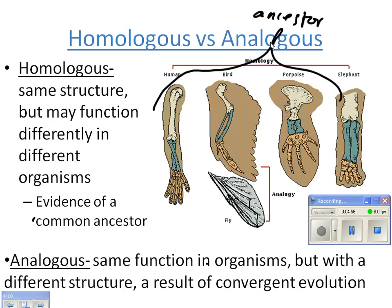Even though these structures have different functions now, their similarity in structure points to a common ancestor. Analogous structures are a result of convergent evolution — structures that have the same purpose, like the wing of a fly and the wing of a bird, but whose internal structures are very different. Convergent evolution means two separate organisms living in a similar environment evolved structures that perform similar functions, but the bone structures inside are not the same.